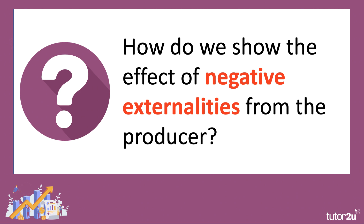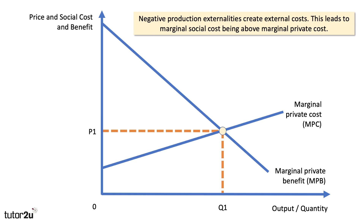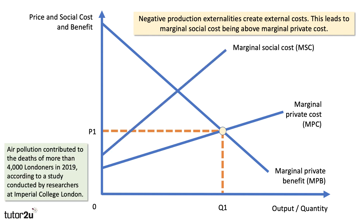How do we show the effect of negative externalities from producing the cement? We've talked about dust particles and CO2 emissions — some negative externalities. They create external costs to bystanders, to third parties. So that leads to marginal social cost — the social cost of the next units being above the marginal private cost. And we're going to assume here that those external costs get larger at higher levels of output.